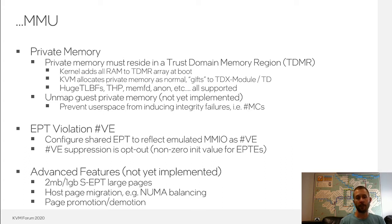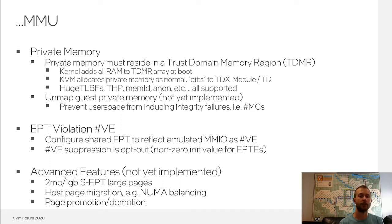As for unmapping guest private memory, because integrity failures result in machine checks, leaving guest private memory mapped in host user space would allow host user space to essentially induce machine checks at will. While it's theoretically possible to harden the Linux kernel to gracefully handle all these machine checks, there's a certain amount of risk with that approach. So we're exploring unmapping guest private memory so that accesses from host user space would result in a page fault rather than a machine check.